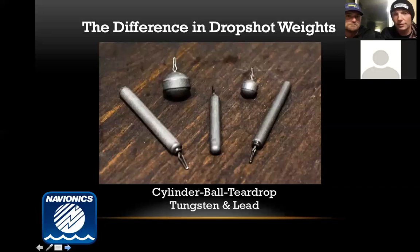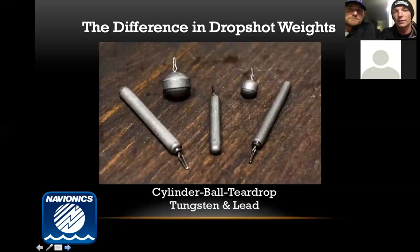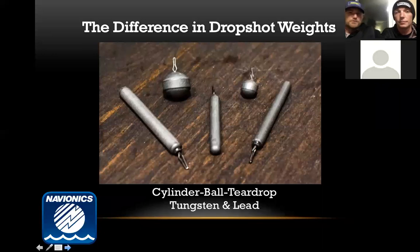The ball style is also nice for flip shotting or pitching under docks and around wood, because with a drop shot you're trying to throw essentially a 12-inch bait between your hook and weight, so the round ball shortens up your sinker a little bit for easier pitching. But day in and day out, I'll use the cylinder style sinker. Around zebra mussels, the cylinder comes through a lot better — the bottom of the weight drags across and keeps your drop line away from the zebra mussels.